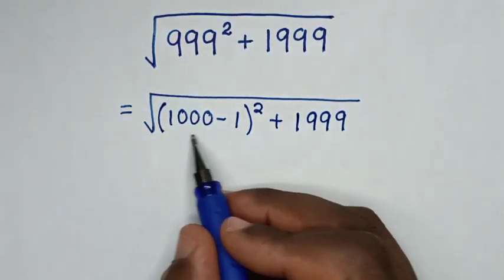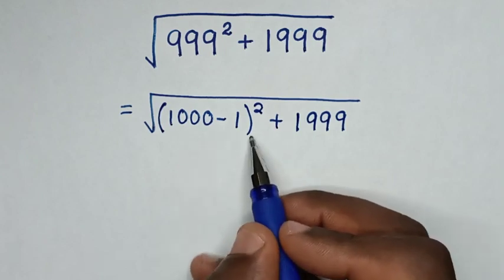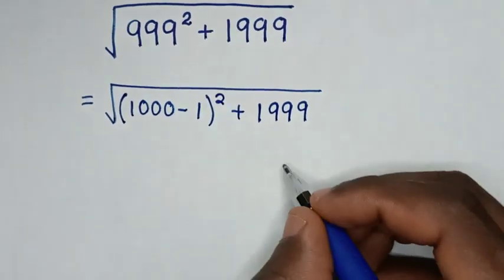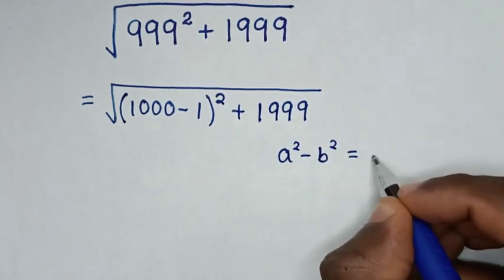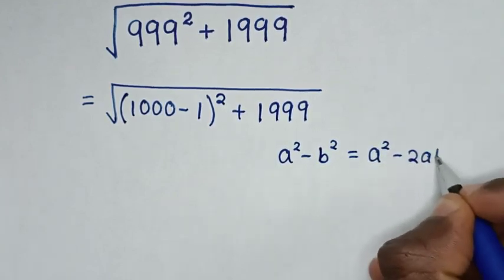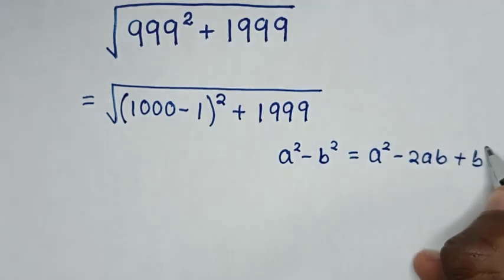Then in the next step, from this part, 1000 minus 1 bracket square is in the form of a square minus b square is equal to a square minus 2ab plus b square.